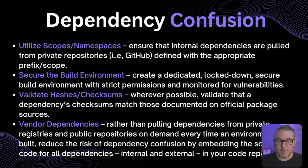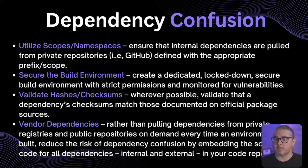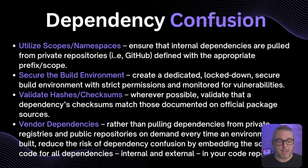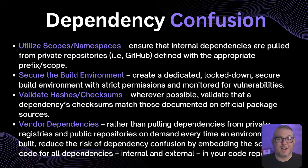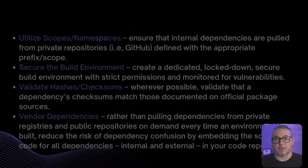Solutions to dependency confusion: utilize scopes and namespaces, ensure internal dependencies are pulled from private repositories with appropriate prefixes and scopes. Secure the build environment with strict permissions and monitor for vulnerabilities. Validate hashes and checksums whenever possible — confirm a dependency's checksum matches the documented official package source. Vendor dependencies rather than pulling from public repositories on demand every build, and embed the source code for all dependencies in your own code repository.